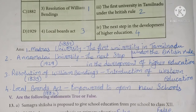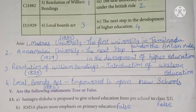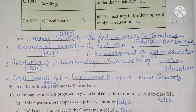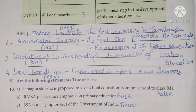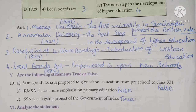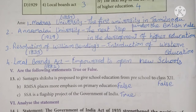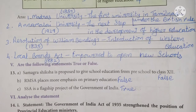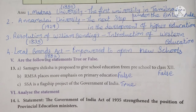Are the following statements true or false? Samagra Shiksha is proposed to give school education from pre-school to class 12 — False. RMSA places more emphasis on primary education — False. The Samagra Shiksha leads for primary education. SSA is a flagship project of the Government of India — True.